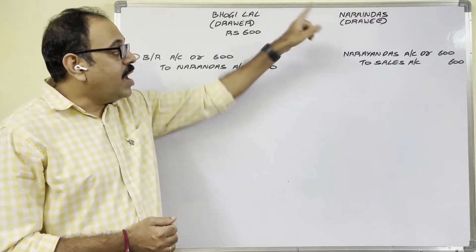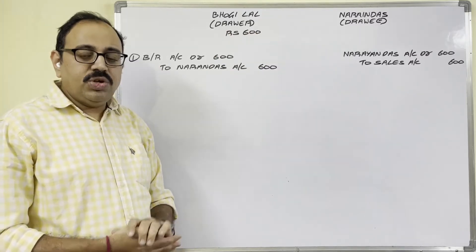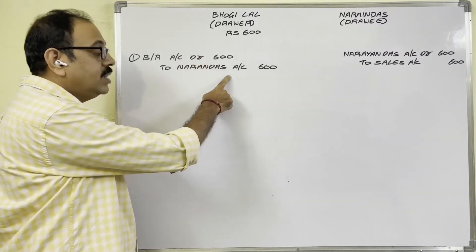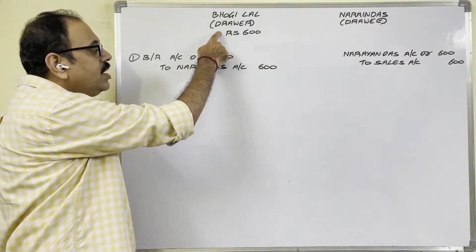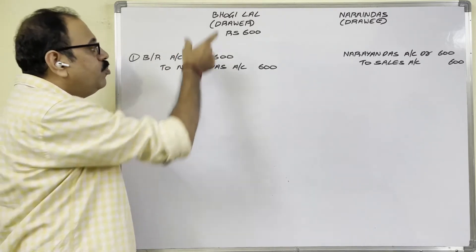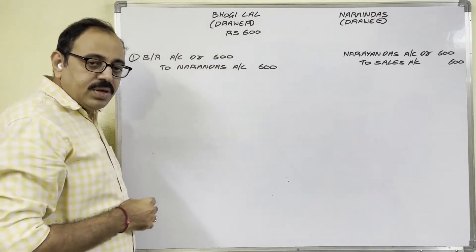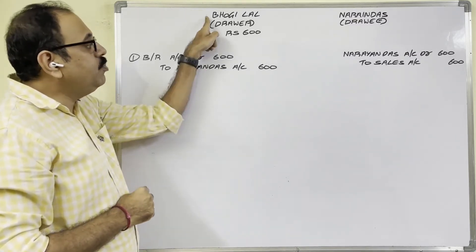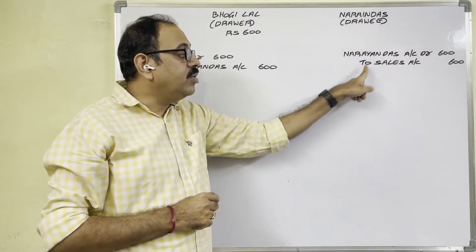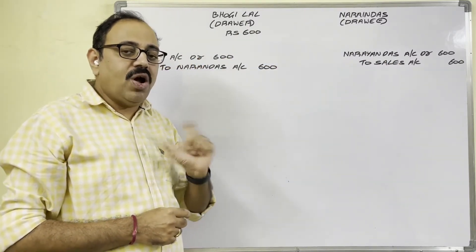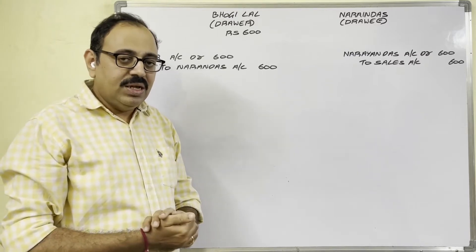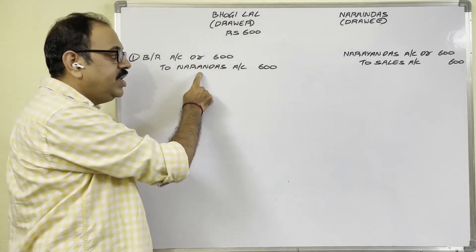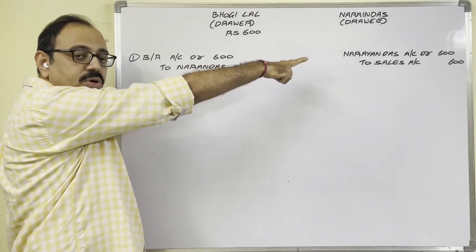On the due date Narayanthas failed to pay 600 rupees. For all these four cases, the first entry is common: Bills Receivable account debit to Narayanthas account — when Bhoge Lal receives acceptance from Narayanthas, he writes this entry in his books. But before this entry, for sales, the entry in Bhoge Lal's book is: Narayanthas account debit to Sales account. In the question he has not given the sales transaction, that is why our solution starts with the first entry only. But to understand this entry, you should know that sales entry also.